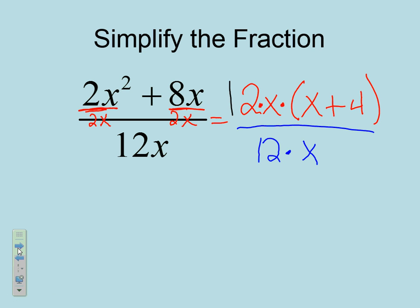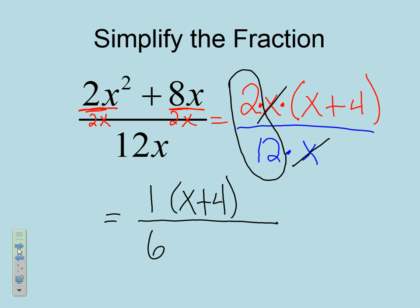Now, when I go to simplify this, do my numbers first. So, 2 and 12. Well, I can simplify that to 1 over 6. Next, I have an x on the top and the bottom. So, they're going to cancel each other out. So, my x's go away. Last thing I have on top is going to be x plus 4. Now, I can't simplify this any further. So, this is going to be my answer.